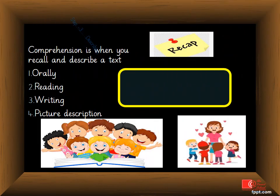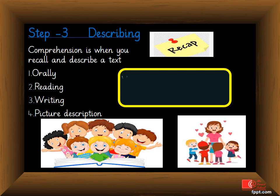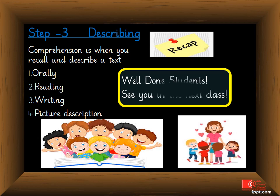Step 3: Describing. You described Ali's fun trip with his friends really well, students. A little recap: comprehension is when you recall and describe a text orally by reading, writing, and through picture description. Well done, students. See you in the next class.